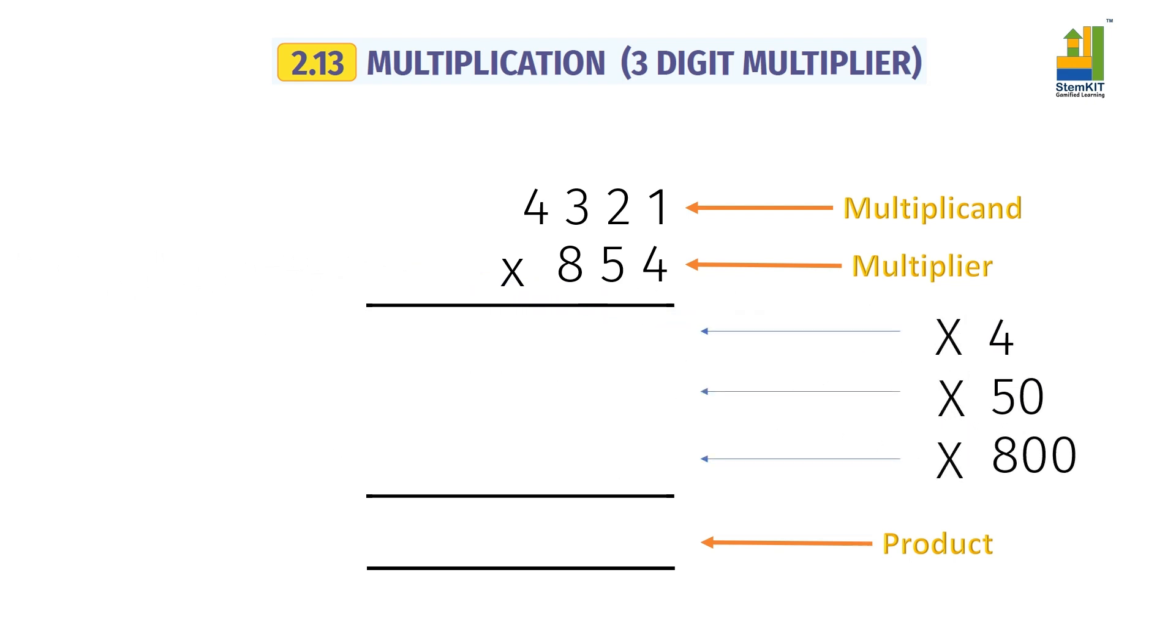Step 1: Multiply the number, or multiplicand, with unit of multiplier.